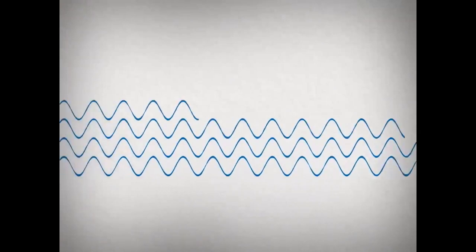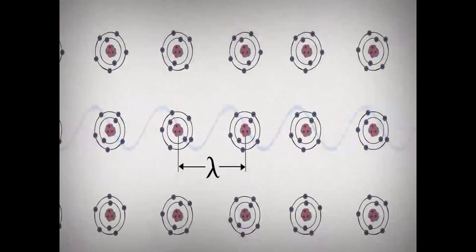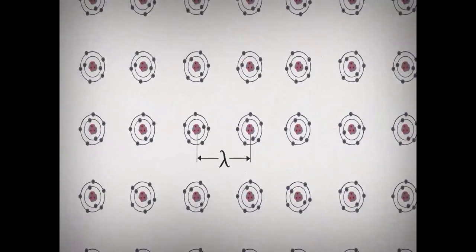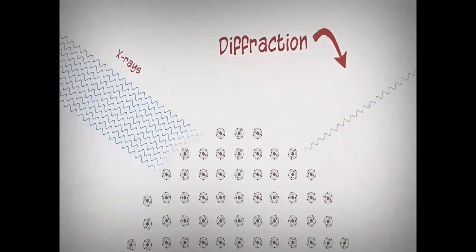X-rays are high-energy light with a repeating period called the wavelength. Since the wavelength of an X-ray is similar to the distance between atoms in a crystal, a special interference effect called diffraction can be used to measure the distance between the atoms.